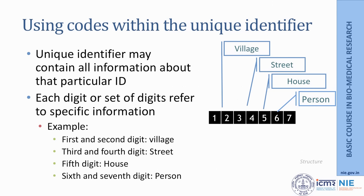For example, the identifier can have 7 digits. Each digit or set of digits can refer to specific identifier information about the individual from whom data was collected. The first and second digits can denote the village or area, the 3rd and 4th may denote the street, digit 5 may indicate the house or flat door number, and the last 2 digits can denote the person's sequential number. So this 7-digit code represents that particular individual.